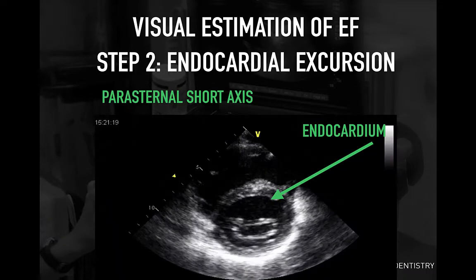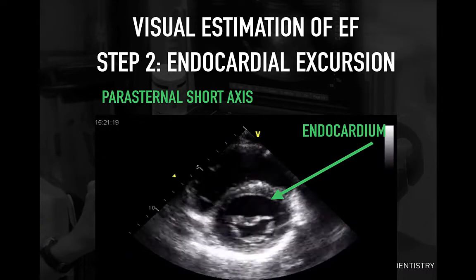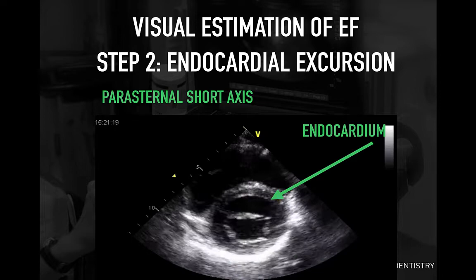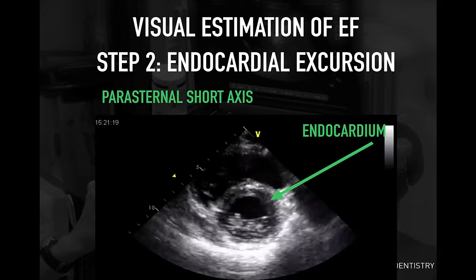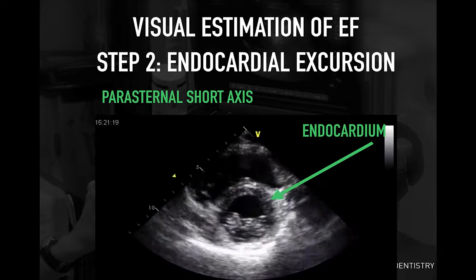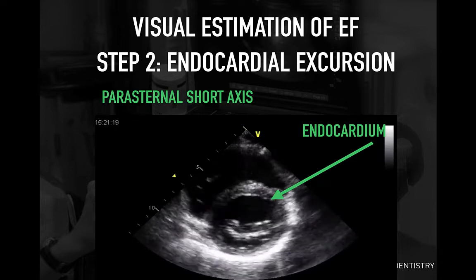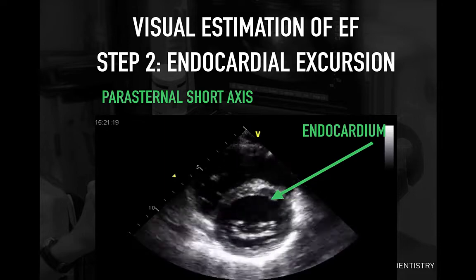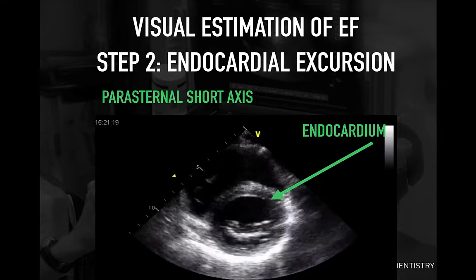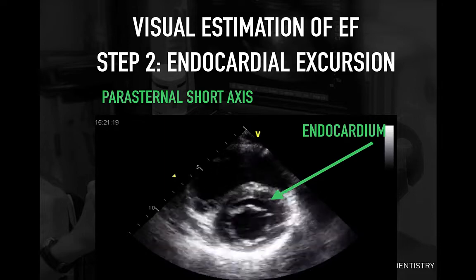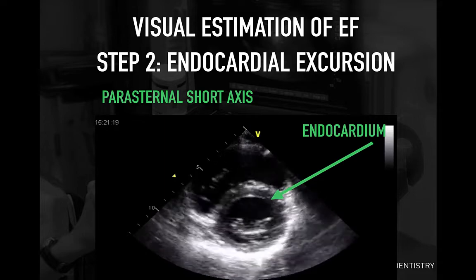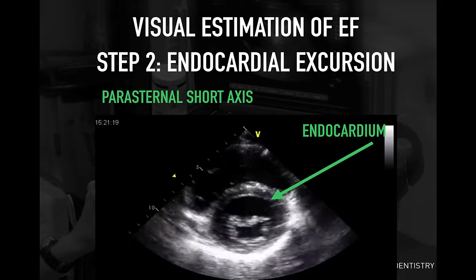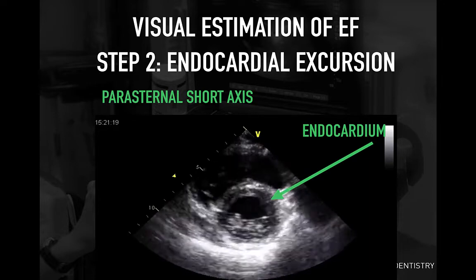Step 2: we should also look at how the endocardium moves. The endocardium — the inner lining of the heart — should move inwards, and the LV cavity in cross-section should be circular in both systole and diastole. In some cases, the endocardium may move inwards but the wall may not thicken, giving the false impression of wall thickening.